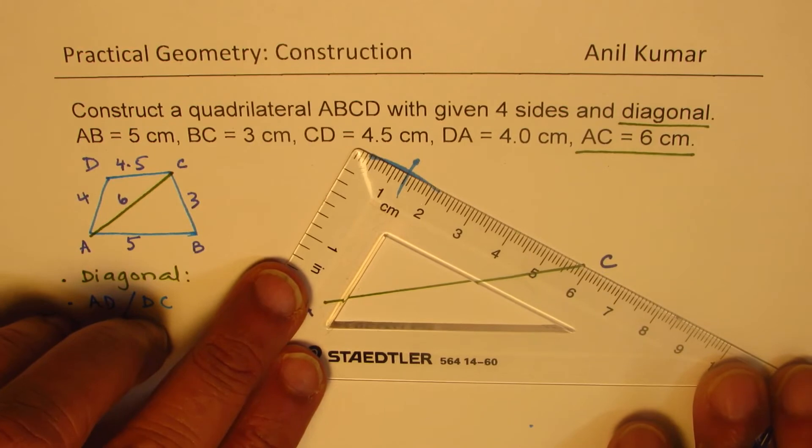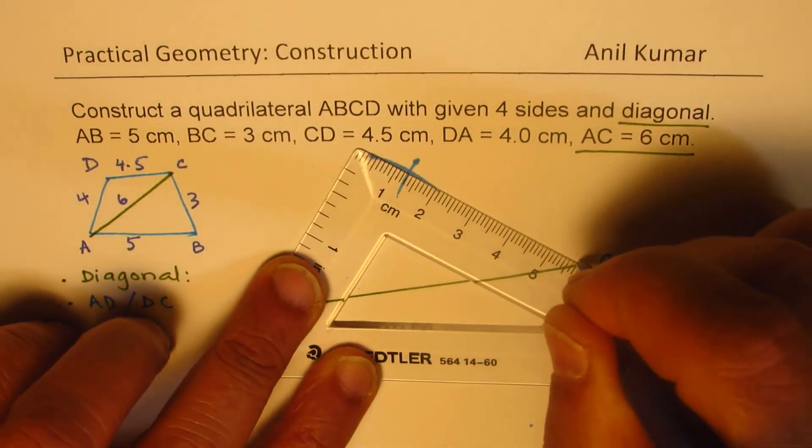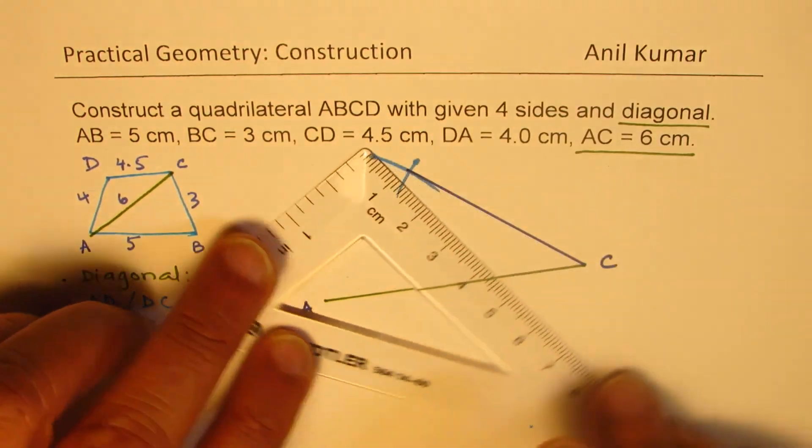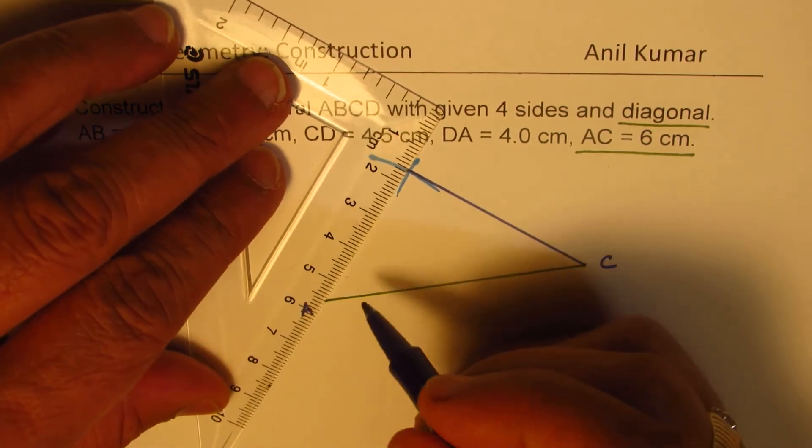So we get the point D for us. We'll join it with A and C. Is that clear to you?